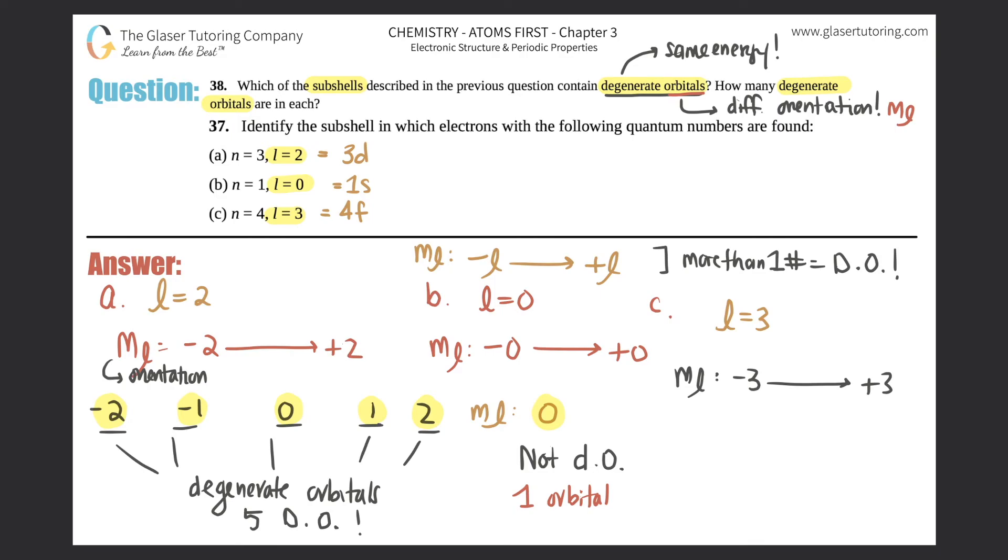Okay, negative three to positive three. Let's see: negative three, negative two, negative one, zero, one, two, and three. Jeez. But there's more than one number, right? So just as long as you have more than one number, all these representations of the orbital would be degenerate. So yes, you would have degenerate orbitals - DO.